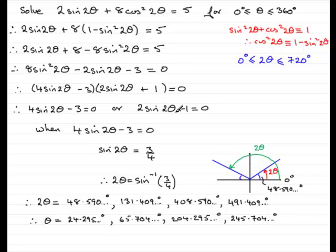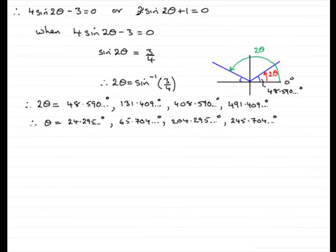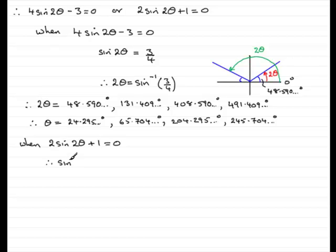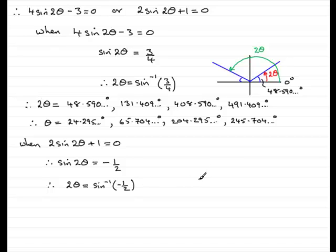Now for the second factor, 2sin(2θ) + 1 = 0 — this one will lead to some nice clean answers. Rearranging: sin(2θ) = −1/2. Taking inverse sine: 2θ = sin⁻¹(−1/2). Drawing a quadrant diagram for this case.